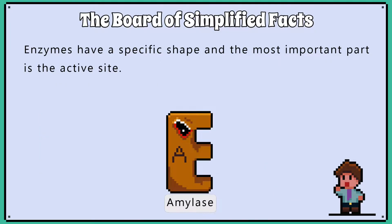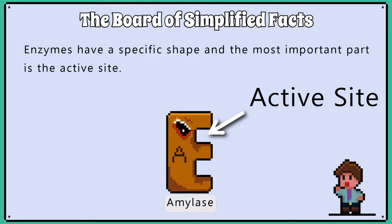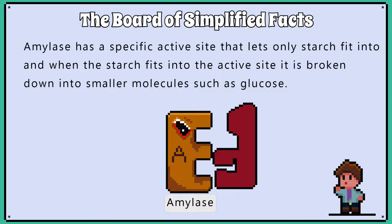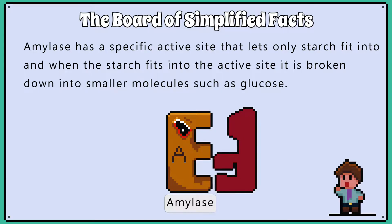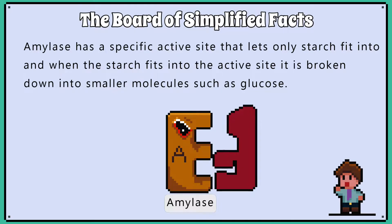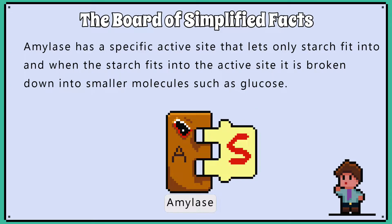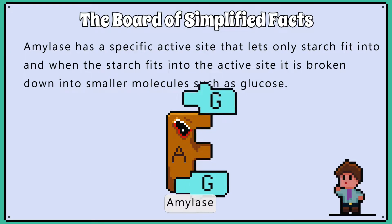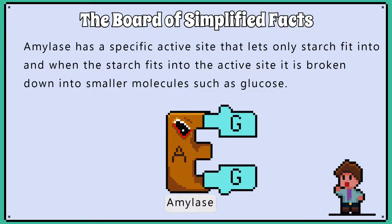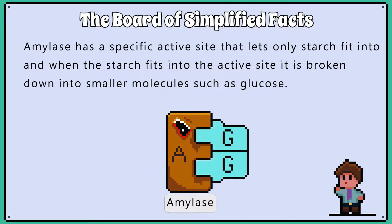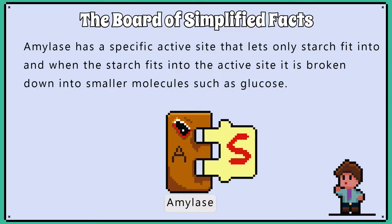Enzymes have a specific shape, and the most important part is the active site. Amylase has a specific active site that only lets starch fit into it, and when the starch fits into the active site, it's broken down into smaller molecules, such as glucose.